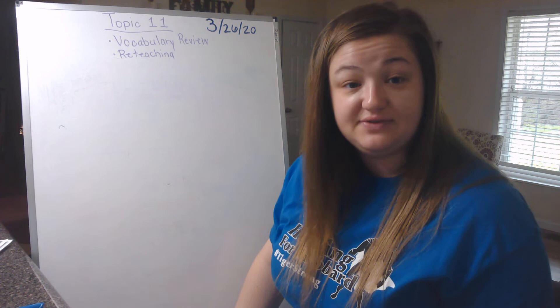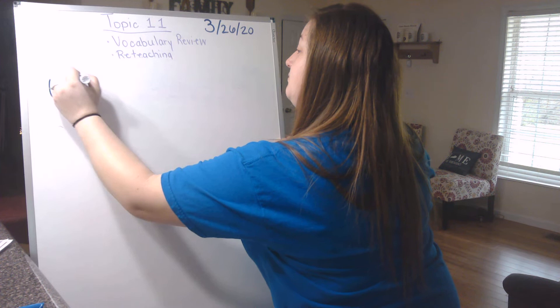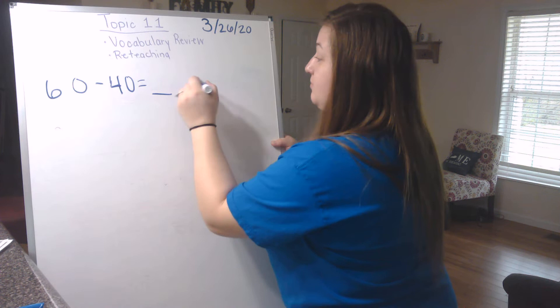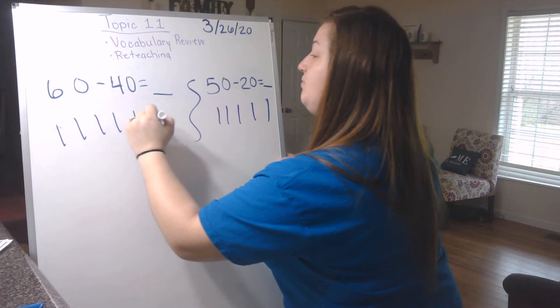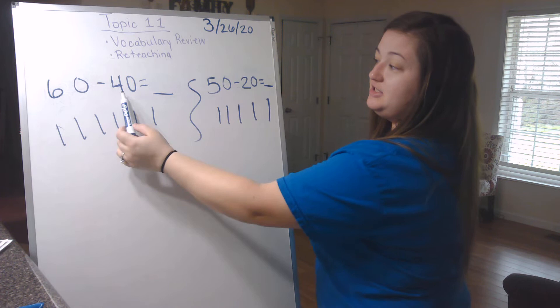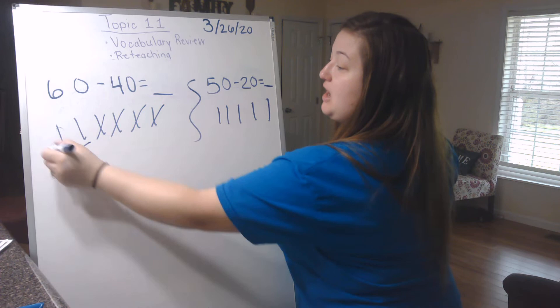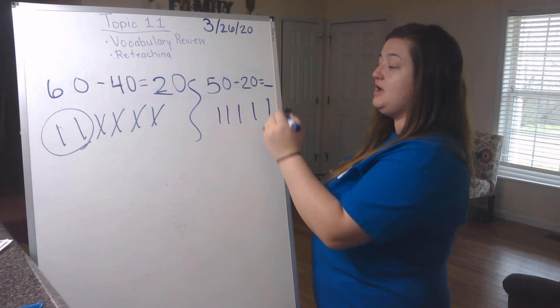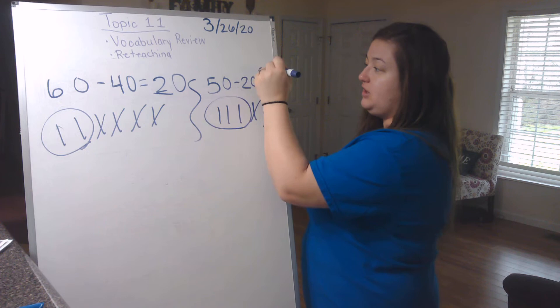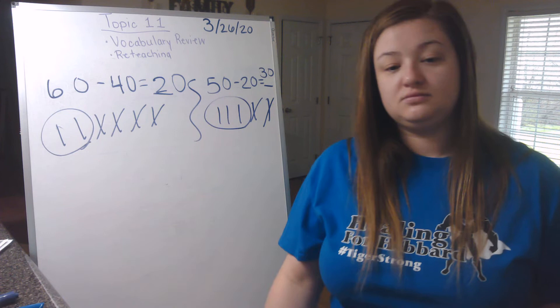So it's already got your place value blocks drawn for you. So I just need to draw them on. So over here, 60 subtract 40. I started with 60. I'm going to take 40 away, which means 4 groups. So 1, 2, 3, 4. I'm left with 2 groups of 10, which will be 20. 50 subtract 20. I started with 50, 5 groups of 10. I'm going to take 2 of those groups away. And I'm left with 10, 20, 30. Alright, that was set A.